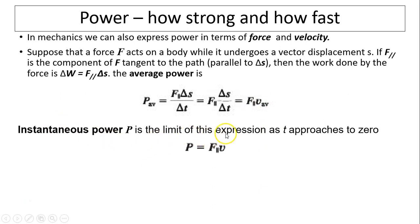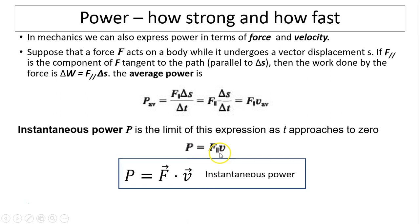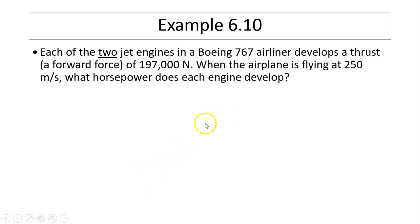Instantaneous power is the limit of this expression. So it would be the instantaneous velocity times that force. Since this is F parallel to the velocity, we can write this as force dot V. That's a dot product. Let's do an example.